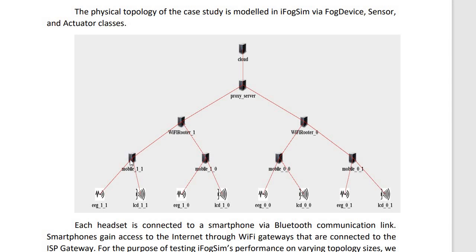The fog layer is introduced only to increase the response time to the players. Players should get the response quickly. If computation is transferred to the cloud and returned back, it takes a lot of time. To reduce that time delay and increase the response, we introduce these fog resources. This is the kind of IoT infrastructure that is going to be used in the EEG game application.